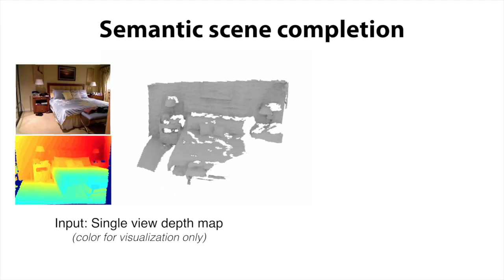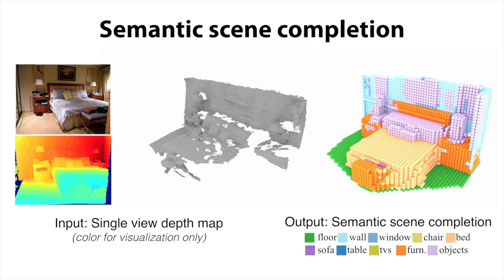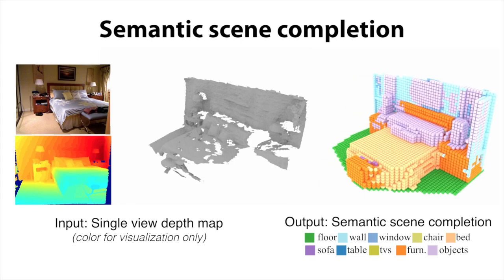In this paper, we focus on the task of semantic scene completion. Given a single depth map as input, we produce a complete 3D voxel representation of occupancy and semantic labels for the whole 3D scene.